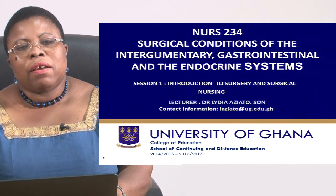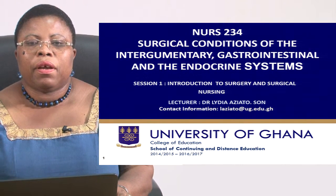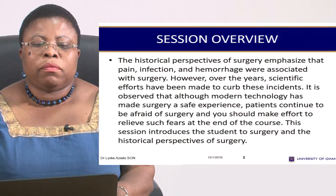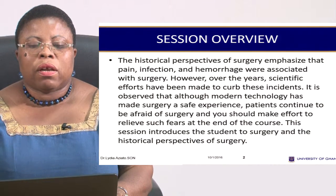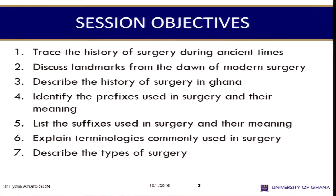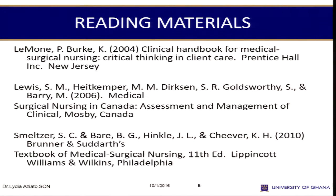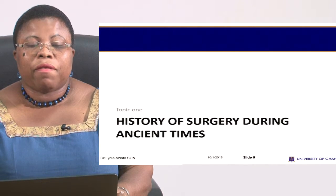Be confident that at the end of the semester you will be well grounded to move on to level 300 — courses 333 and 334 — which are the other two surgical nursing courses for your program. The first session of your course outline talks about historical perspectives of surgery, prefixes and suffixes used in surgery, and types of surgery. Because you are already nurses, some of these things will be very familiar to you.